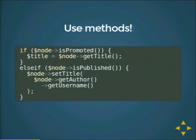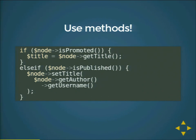We've also been adding entity type-specific methods that make sense for a certain entity type. For nodes, which have publishing states, created dates, and authors, we've added methods for that functionality. When there are methods for base functionality for an entity type, you should use those — it's best practice. If you're providing an entity type, it also makes sense to provide meaningful methods with an interface for them.